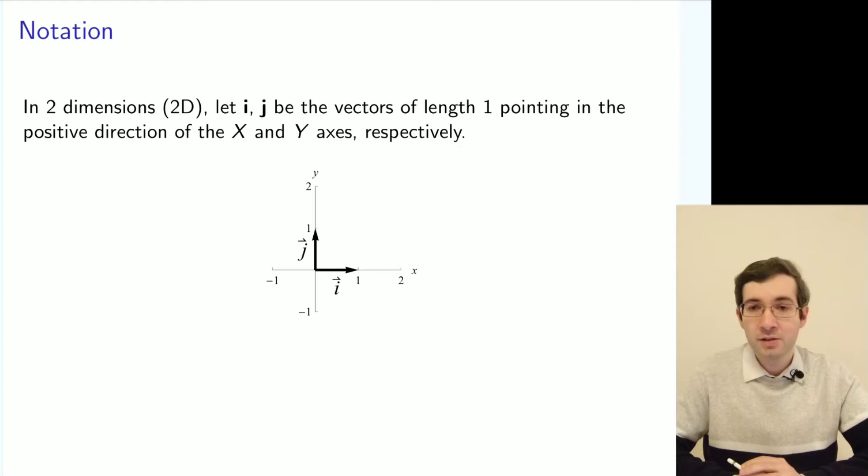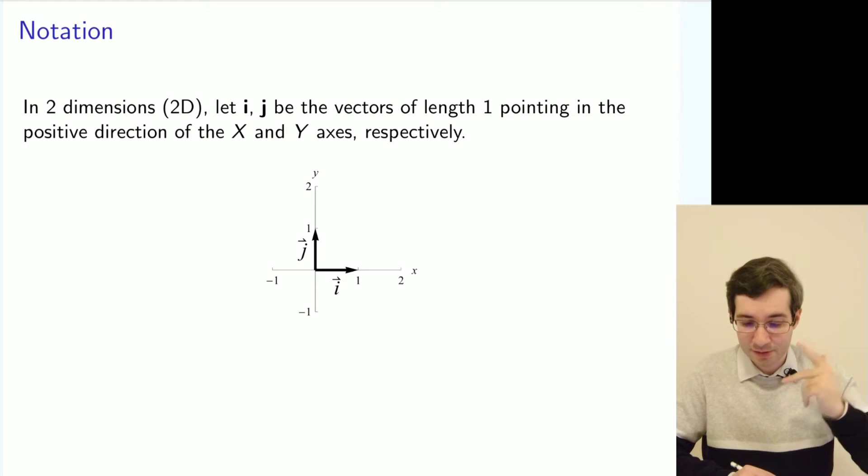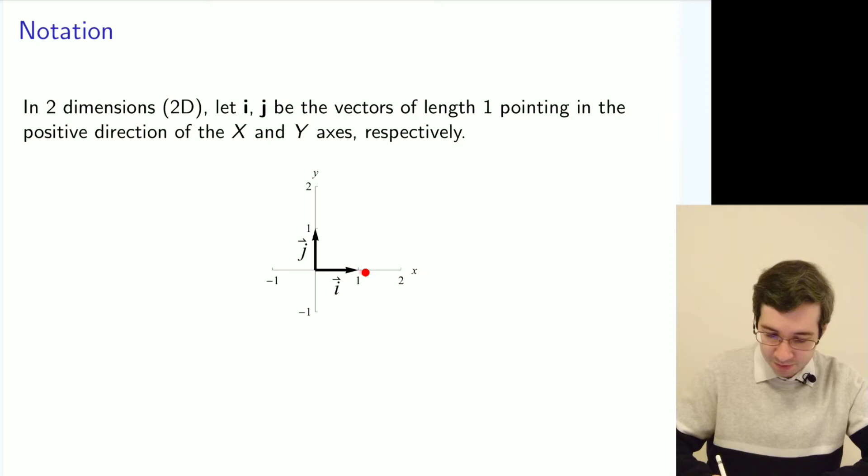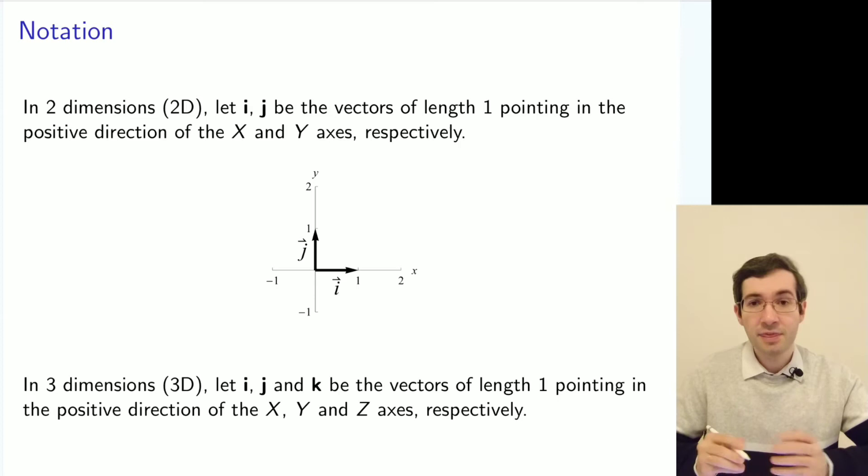You probably remember that the vector can be represented using its components, but for that you need to understand the coordinate system. This is a Cartesian coordinate system which has two principal directions and corresponding unit vectors i and j, which denote the direction in the x and y respectively.